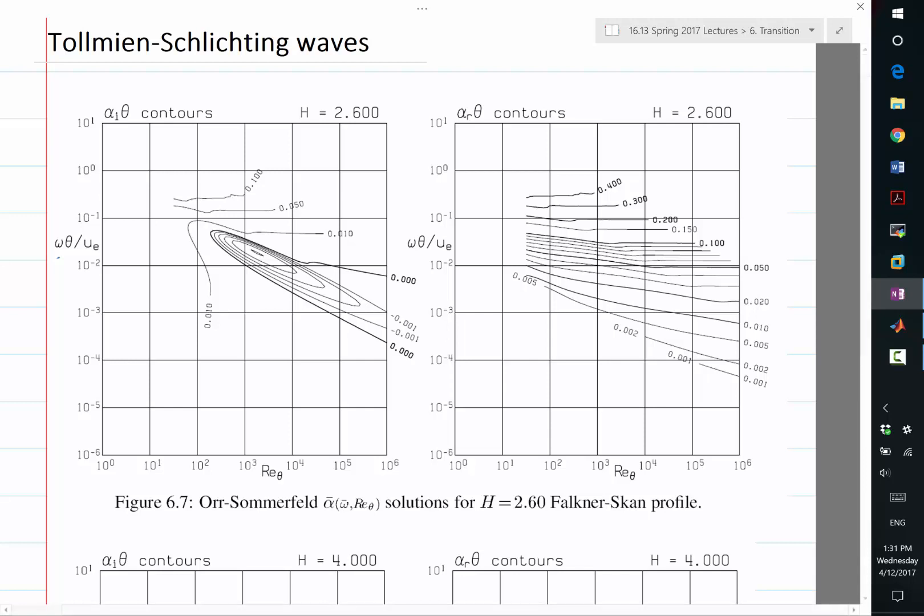Let's pick a particular omega and imagine we start from the leading edge of a boundary layer of a self-similar solution. In this case, the Blasius boundary layer starting from the leading edge. Pick a frequency and let's progress downstream. As we progress downstream, how does my amplification factor, a_i, move as I progress downstream? Would it move at all in this graph?